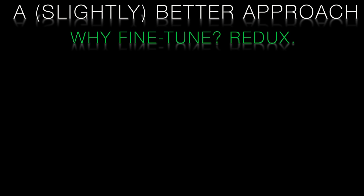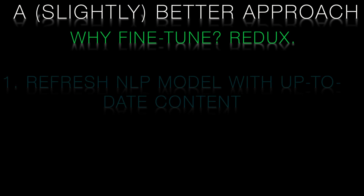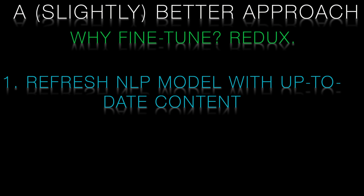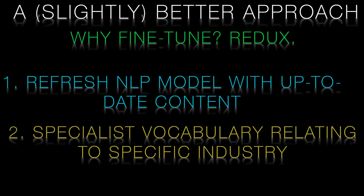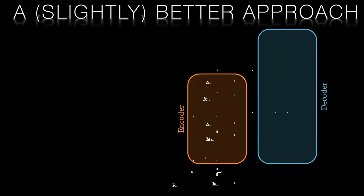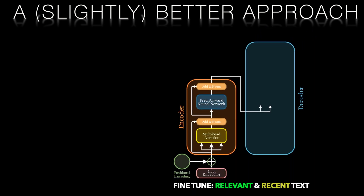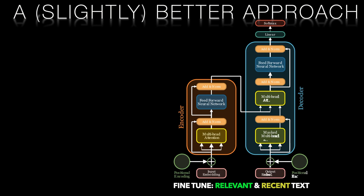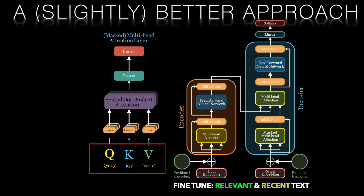In our last video we discussed a couple of reasons why we would want to fine-tune. Firstly, we'd like our content to be as up to date as possible so that it's relevant. Secondly, we'd like to make our NLP model less of a generalist and more specialized in our specific field, such as capital markets. Accordingly, we'll want to train it on recent and relevant articles by fine-tuning it on relevant prompts and completions during training. We're getting the model to update its query, key and value matrices in its attention heads.